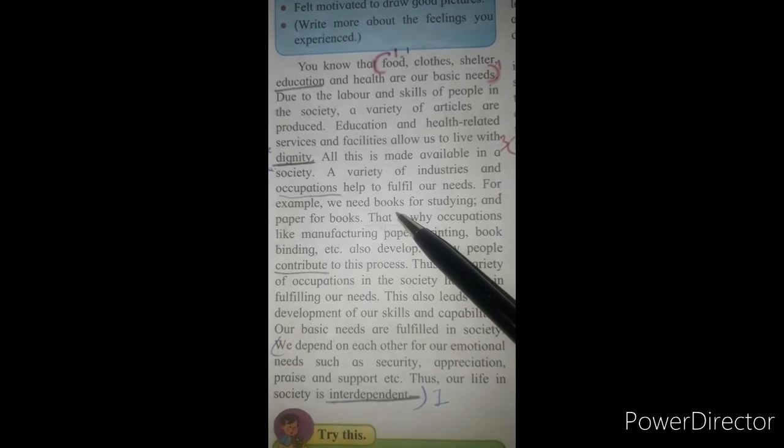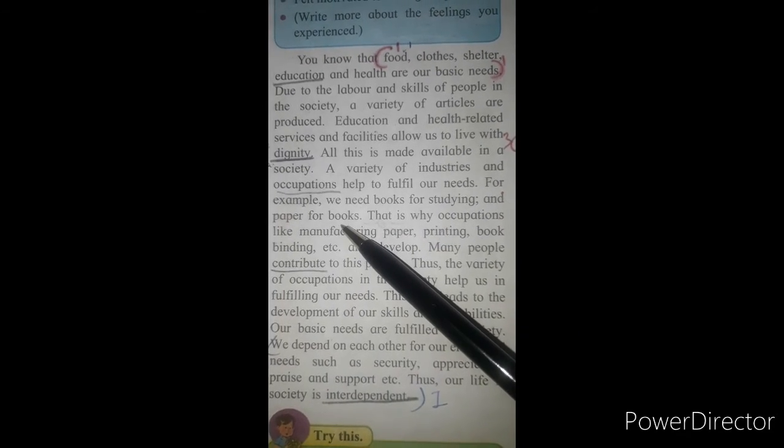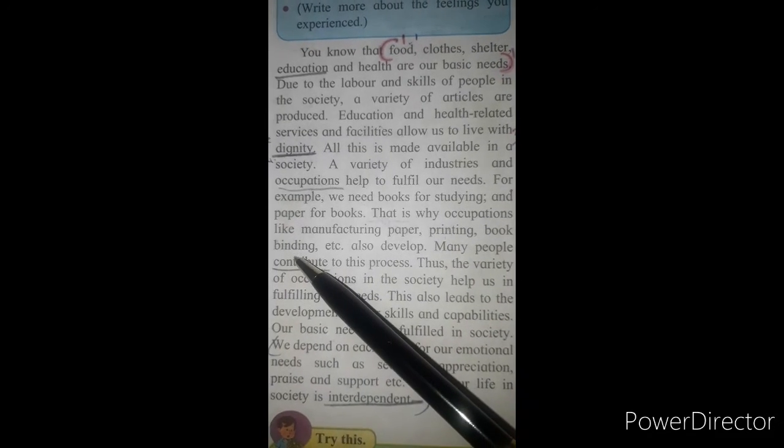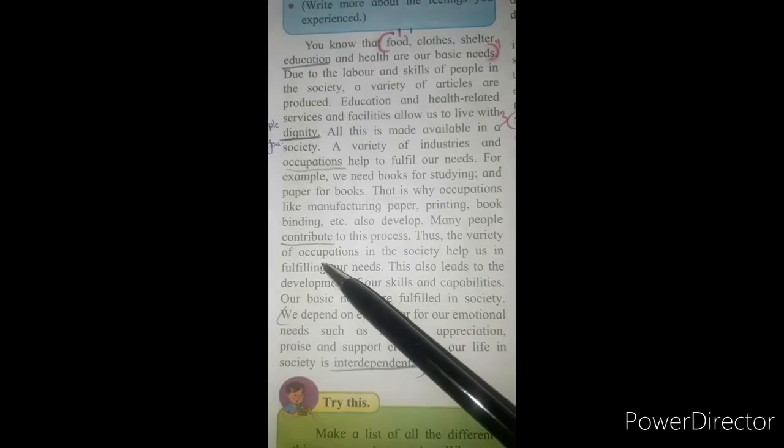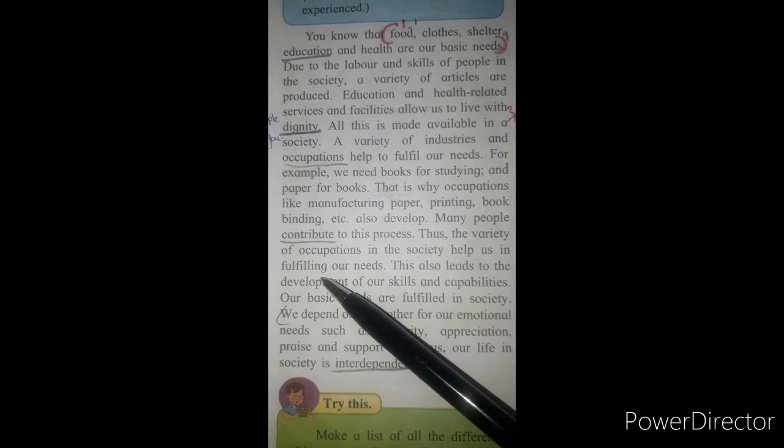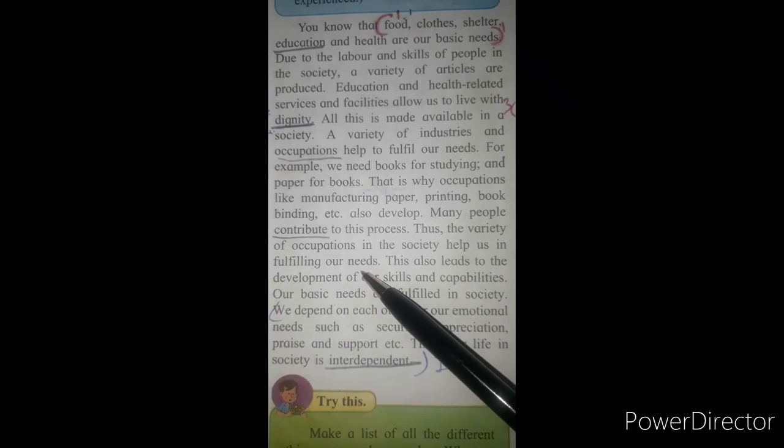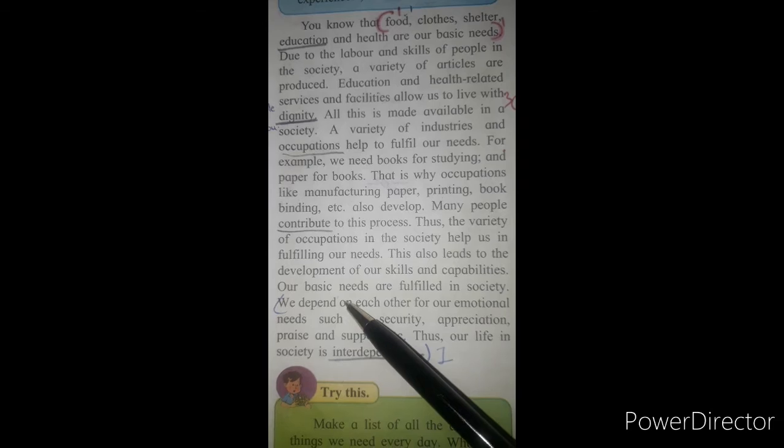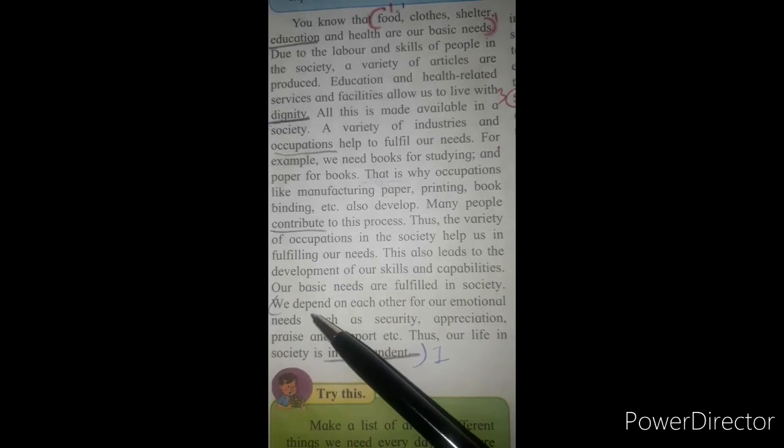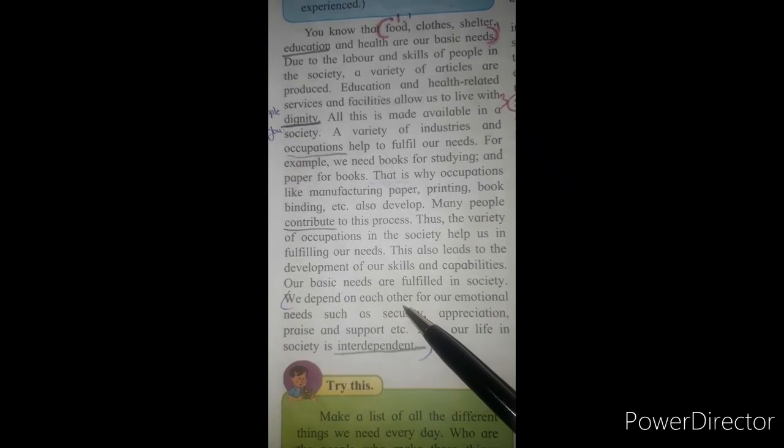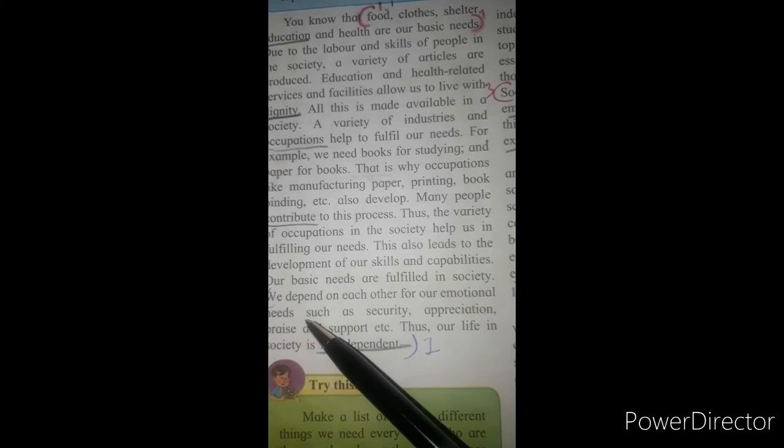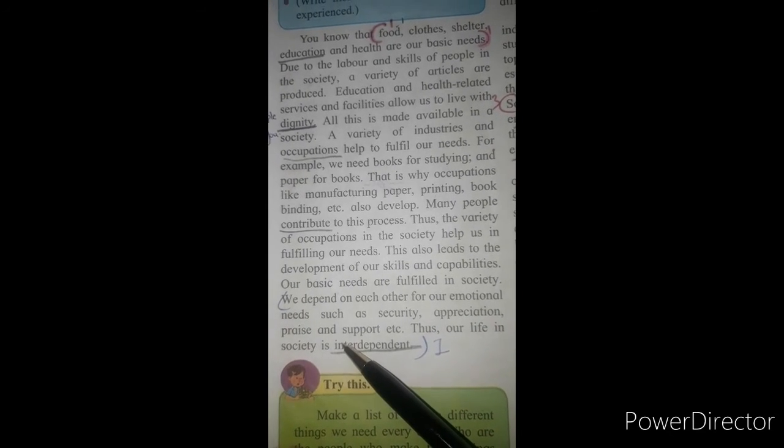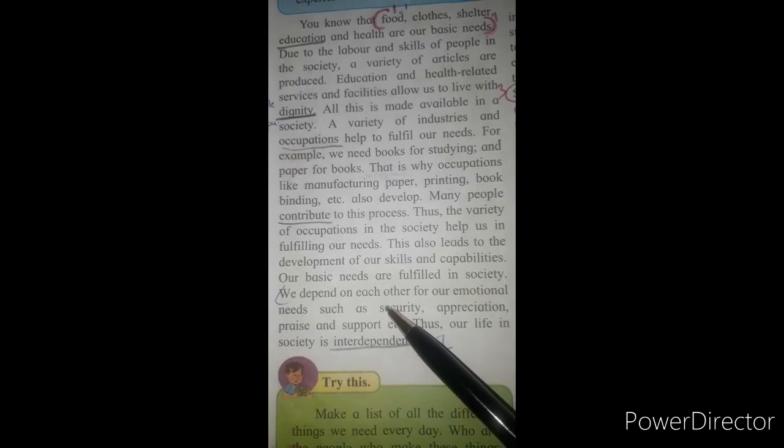For example, we need books for studying and paper for books. That is why occupations like manufacturing paper, printing, bookbinding etc. also develop. Variety of occupations help our society's needs. This develops our skills and capabilities. Our basic needs are fulfilled in society. We depend on each other for our emotional needs such as security, appreciation, praise and support. For that, we need each other. Thus, our life in society is interdependent.